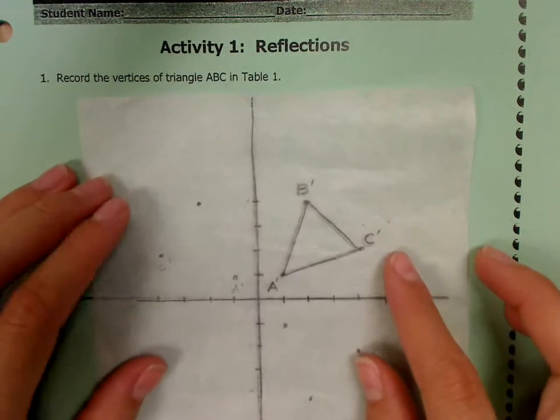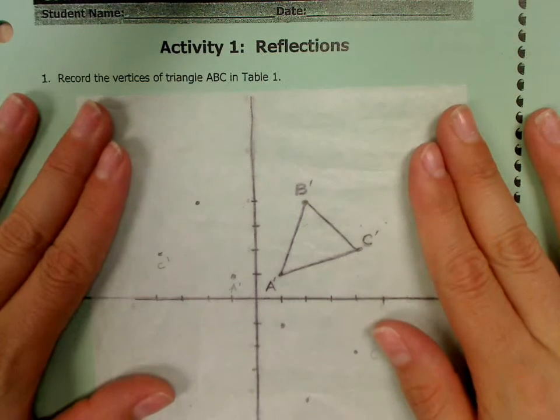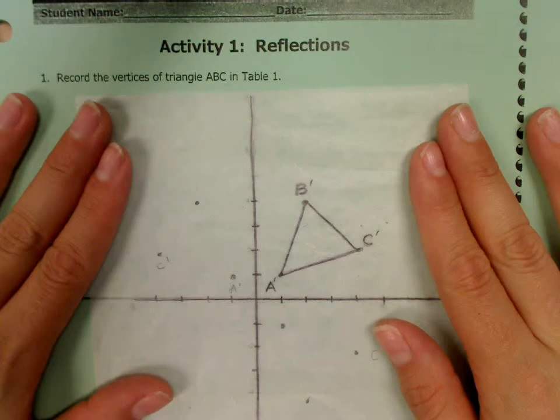All right, so you're going to take your patty paper and sit it directly on top of what's already drawn on your paper. So go ahead and do that now.